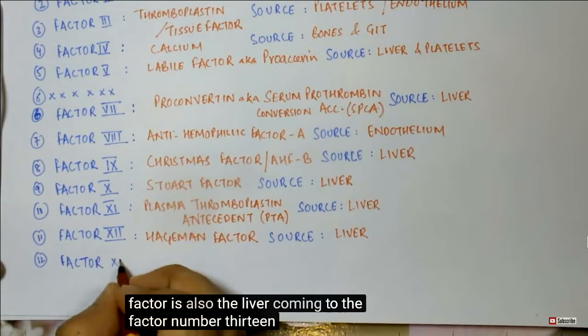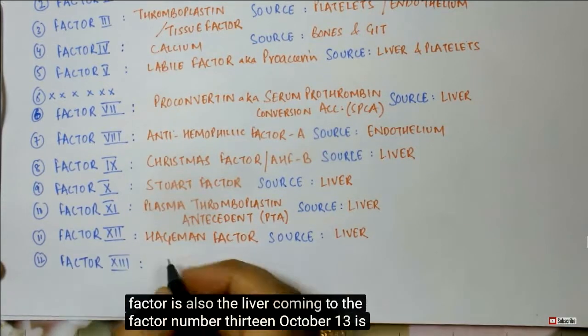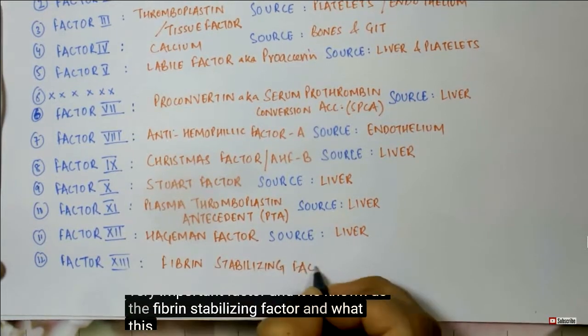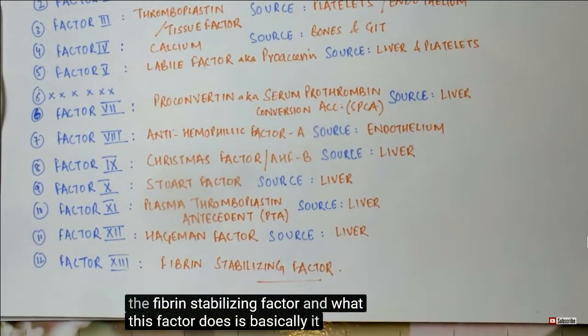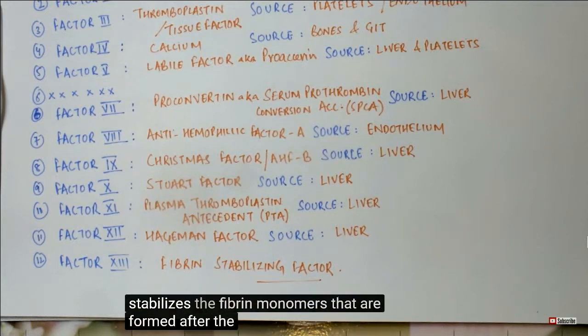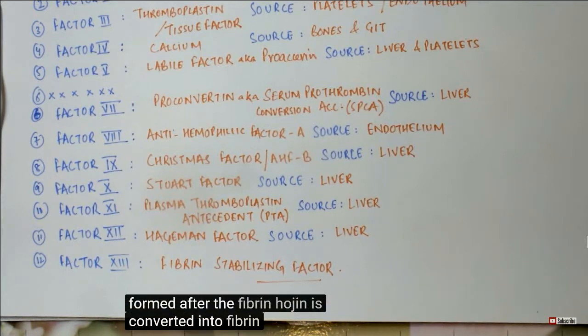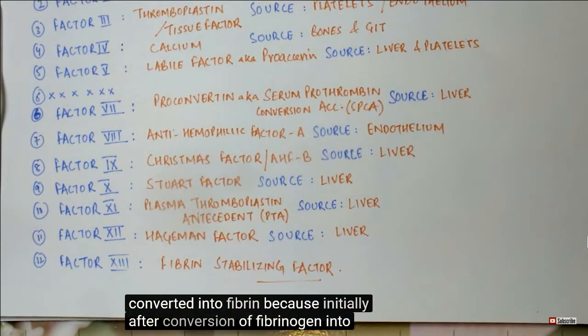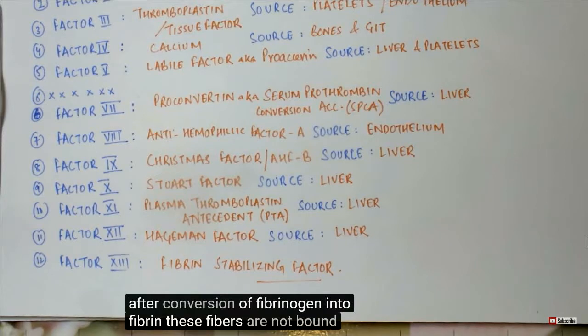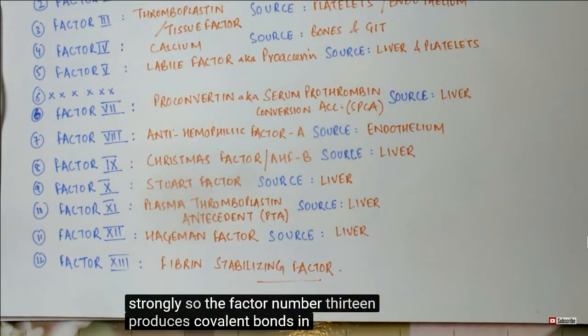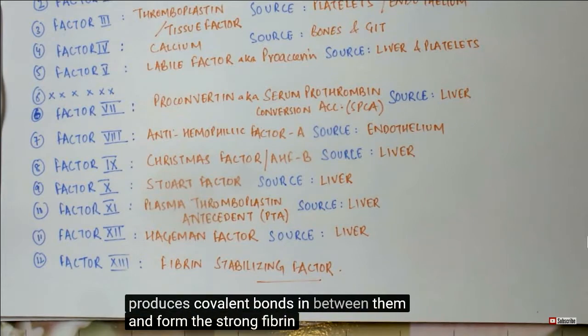Factor number 13 is a very important factor and it is known as the fibrin stabilizing factor. What this factor does is basically it stabilizes the fibrin monomers that are formed after the fibrinogen is converted into fibrin. Because initially, after conversion of fibrinogen into fibrin, these fibers are not bound strongly. So, factor number 13 produces covalent bonds in between them and forms a strong fibrin mesh.